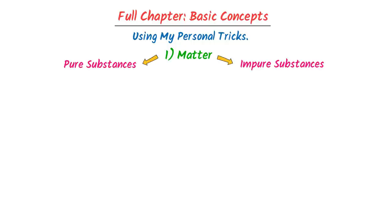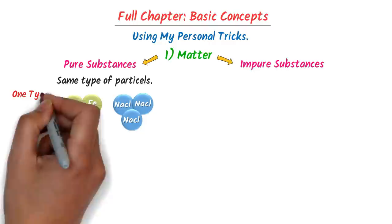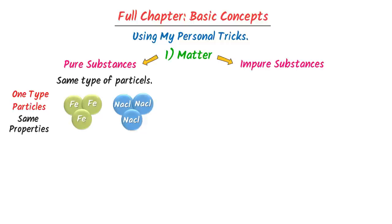Pure substances contain the same type of particles. For example, consider iron sheet and sodium chloride. The iron sheet contains one type of particles, and all particles have the same properties, so iron sheet is a pure substance. Similarly, sodium chloride also contains one type of particles with the same properties, so sodium chloride is also a pure substance.